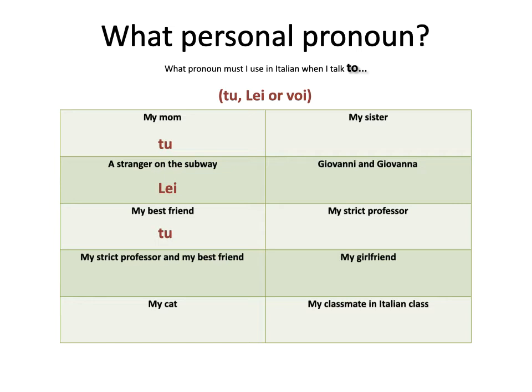Now, I want to talk to a group of people that includes my best friend but also my strict professor. What do I use for groups of people? I say voi — you guys. And if I want to talk to my cat — unless you're joking, you're informal when you talk to your cat, you say tu. How about your sister? The most typical use would be tu — you're informal to your sister. Now, we're talking to a group of people that includes both Giovanni and Giovanna — a man and a woman. It doesn't matter what their genders are, we use voi.